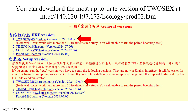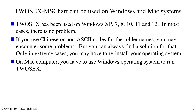You can download the most up-to-date version of 2-Sex at the provided link. There are two versions: the executable version, 2-Sex MS Chart RAR file, and the setup version, 2-Sex MS Chart setup RAR file. 2-Sex MS Chart can be used on Windows and Mac systems.